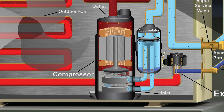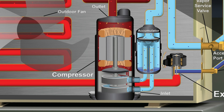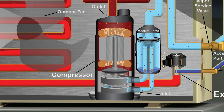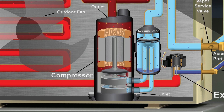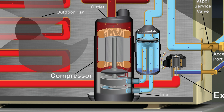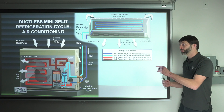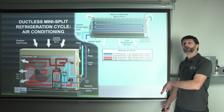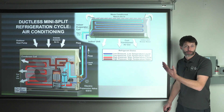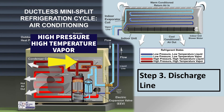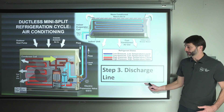Inside the compressor, refrigerant is traveling through, and you'll also have refrigerant oil traveling through as well. Refrigerant oil is circulated through the entire system with the refrigerant while it's being pumped. Step three: you have high pressure, high temperature vapor refrigerant — that's the hottest point in the entire line — that's the discharge line.